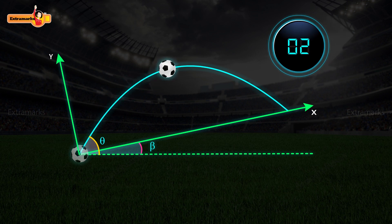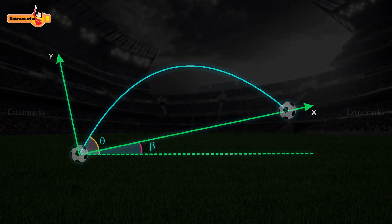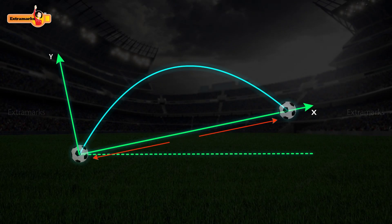The total time in which the projectile is in flight is called time of flight. The distance travelled by the projectile on an inclined plane is called range.